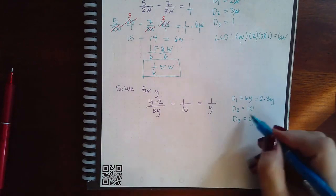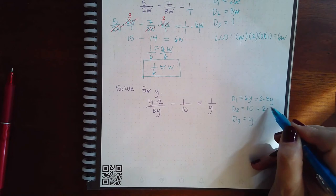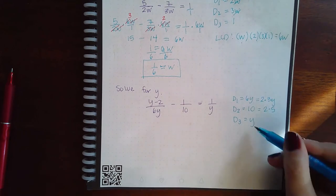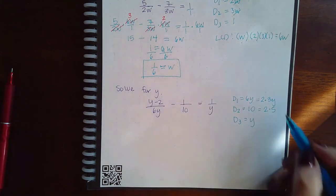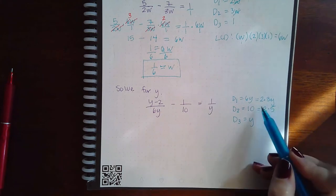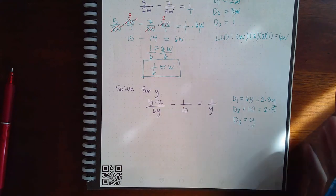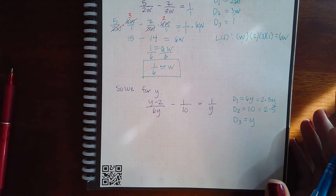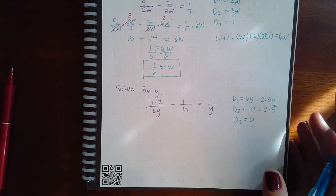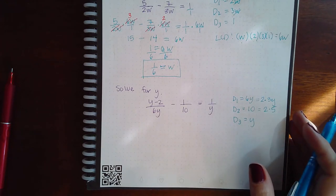10 can be written as 2 times 5. And then Y is just Y. But you need to make sure that you're looking at these values in their prime factorizations. And as those denominators get increasingly more complicated, you still need to have them in their prime factorizations.